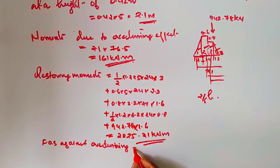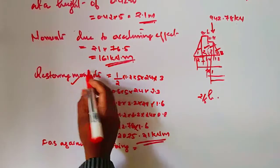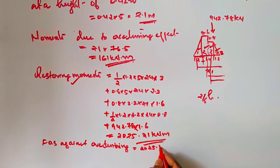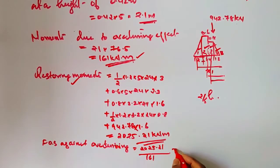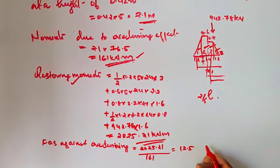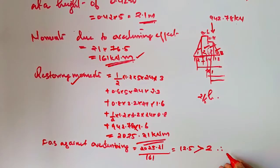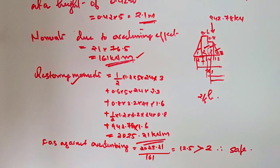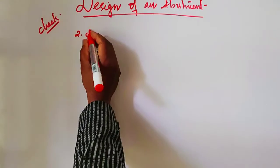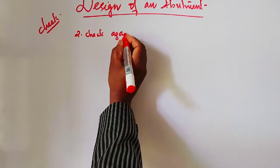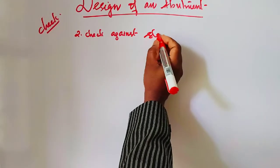The factor of safety against overturning equals restoring moment divided by overturning moment: 2025.21 / 161 = 12.5. Since 12.5 is greater than 2, the abutment is safe against overturning.